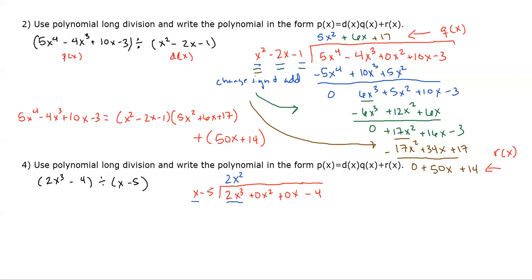Same process: what number multiplied by x gives 2x³? That's 2x². Multiplying: 2x² · x = 2x³, 2x² · (−5) = −10x². Change signs and add, giving us 10x² + 0x — keeping that placeholder — minus 4.